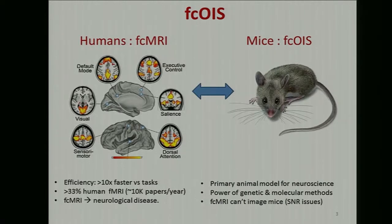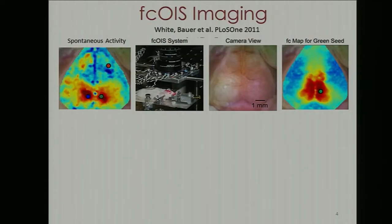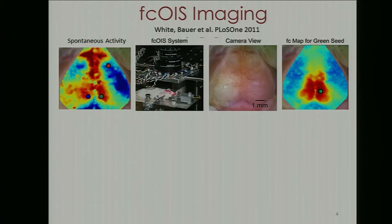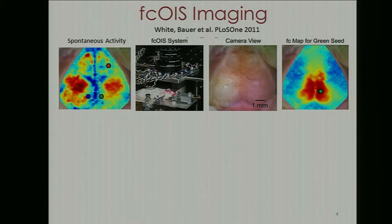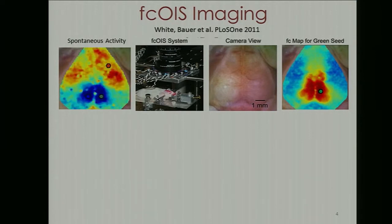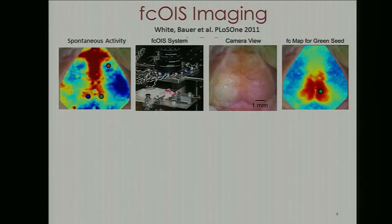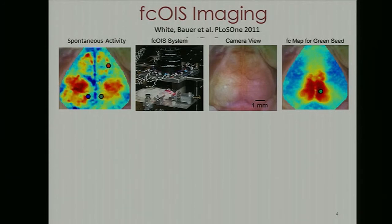What we're interested in doing is developing a mouse analog of fMRI. A mouse is the primary animal model for neuroscience, enabling use of all the power of genetic and molecular methods. The trick is that fMRI doesn't quite have the signal-to-noise ratio to be performed in mice. So we use a very traditional optical setup using diffuse reflectance imaging, viewing the brain through the intact skull. On the left is a movie of the oxyhemoglobin dynamics with spontaneous brain activity in a mouse, sped up more than 10 times. You can see there's a fair amount of structure in this image series.